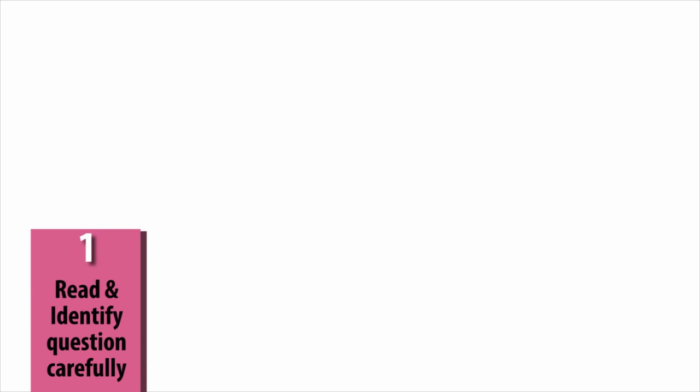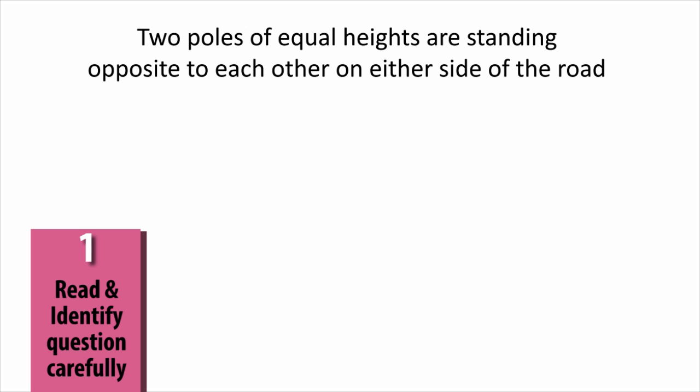So let's look at the question and read it. Two poles of equal height are standing opposite each other on either side of the road, which is 80 meters wide.